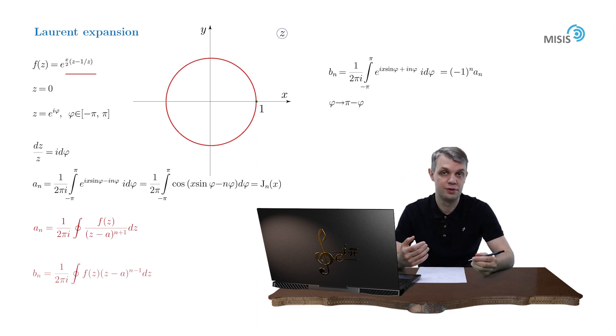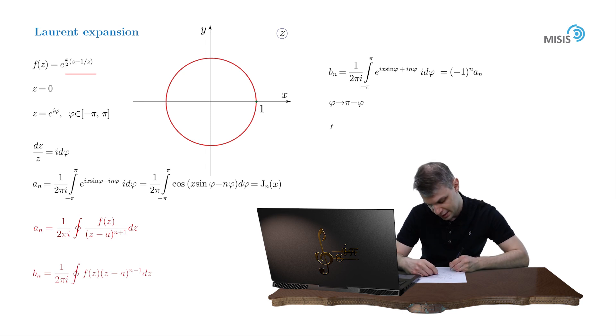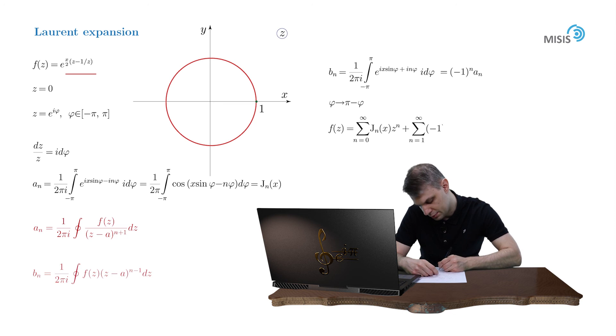And this way we obtain the full Laurent expansion for our function. So it's the sum from 0 to plus infinity of jn of x times z to the power of n plus the sum over n from 1 to plus infinity negative 1 to the power of n jn of x times z to the power of negative n. And that's it!